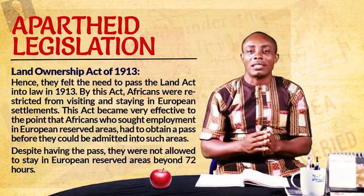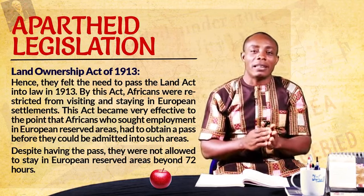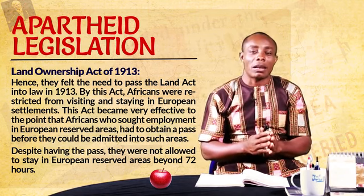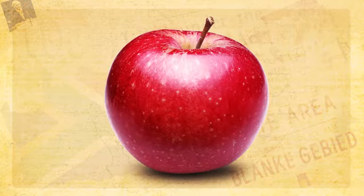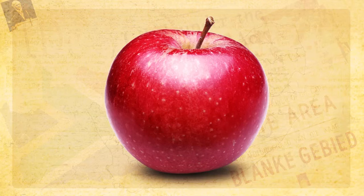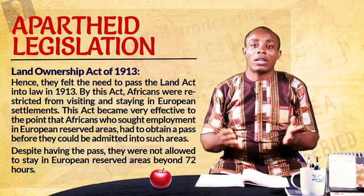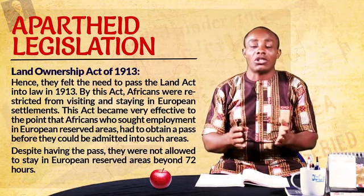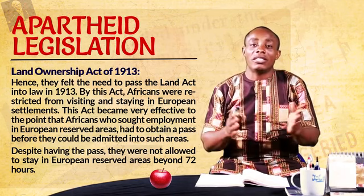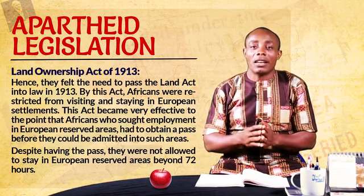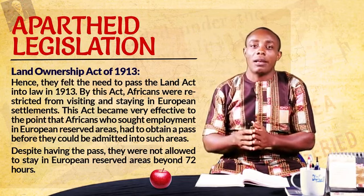Without a pass, you could not be found in European areas — you could not enter those areas. And even with the pass, you could not seek employment or live in that area beyond 72 hours. This was very unbearable to South Africans. As you can see in this image, women are protesting, some carrying placards saying 'We pass, we are slaves.' In your own land, you are restricted from entering certain areas — mostly urban centers. Africans were confined to the rural areas with the introduction of the Land Ownership Act of 1913.